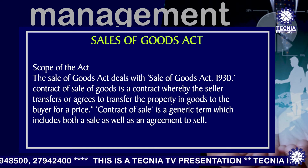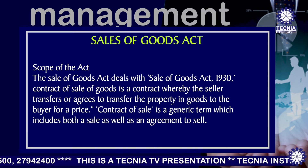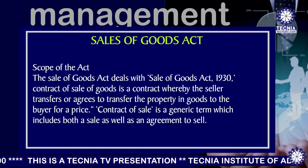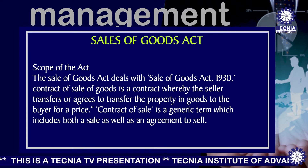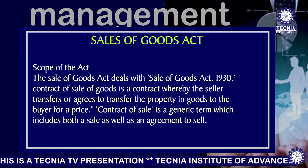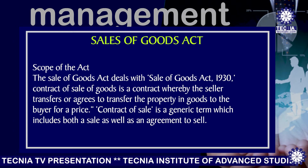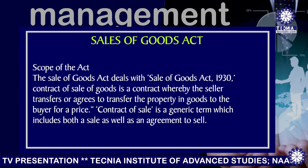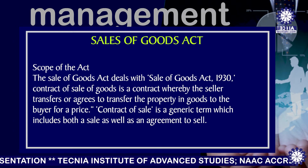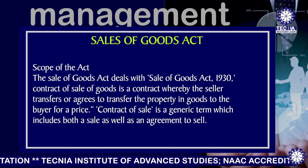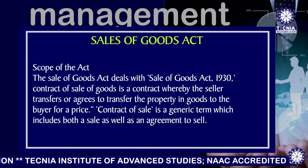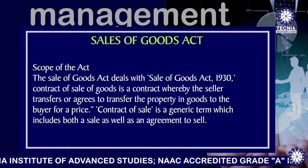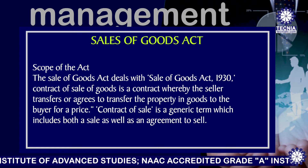The scope of the act: a contract of sale of goods is a contract whereby the seller transfers or agrees to transfer the property in goods to the buyer for a price. A contract of sale is a generic term which includes both a sale as well as an agreement to sell.